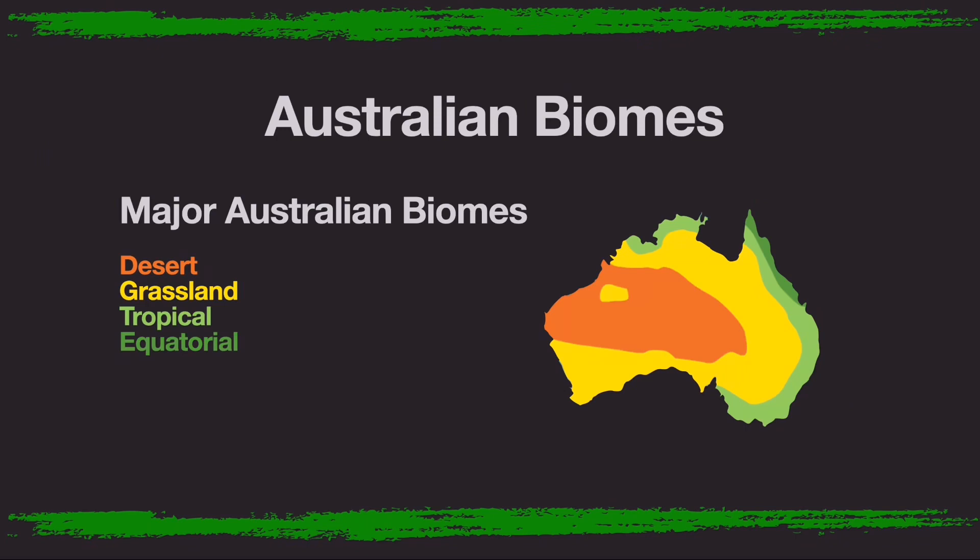Here are the four main Australian biomes. Desert, which takes up most of central Australia. Grassland and savannah, which takes up the edges. Tropical, which you find over east, and equatorial, which you find up near the equator.